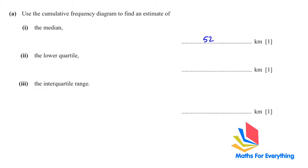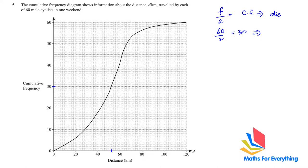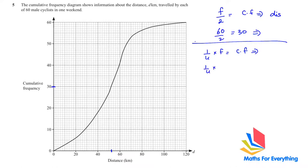To find the lower quartile, use the formula: one-quarter of frequency. One-quarter of 60 = 15. Reading off the graph at cumulative frequency 15, the corresponding distance is 36 kilometers.